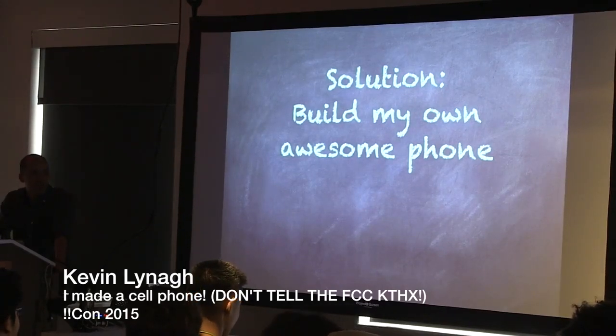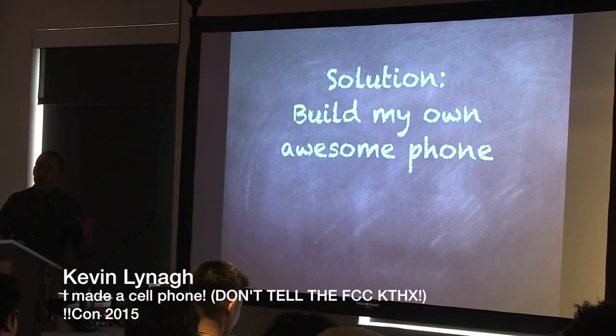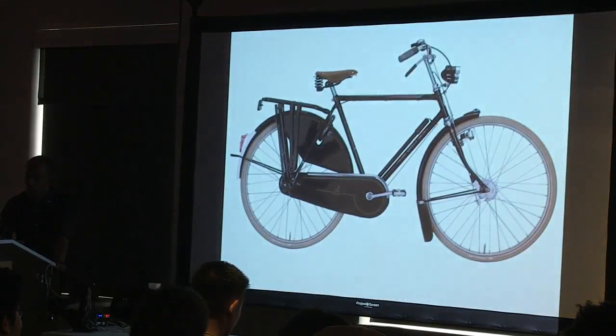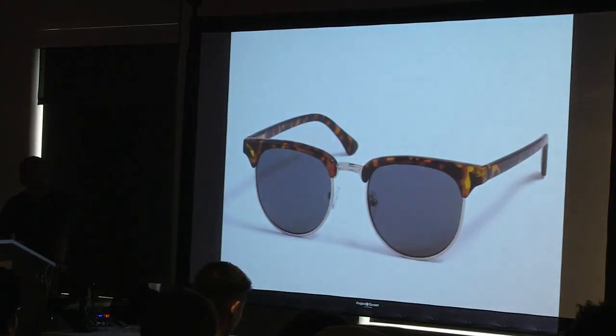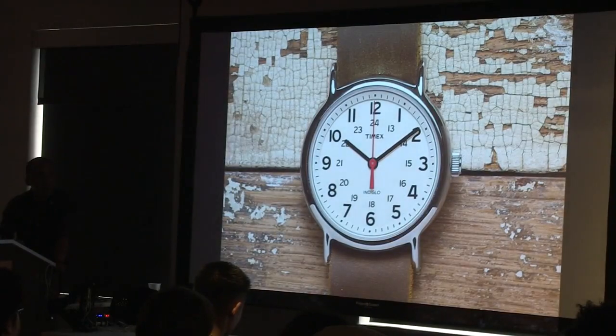In particular, what I wanted was a phone that would match the rest of the stuff that I have and use every day. Things like a bike, or my sunglasses, or a watch. All of these things are technology, but they all have this sort of nice, timeless aesthetic quality. In 10 years, they're still going to be nice. It's not just like a gadgety technology thing. So that's what I wanted out of a phone.